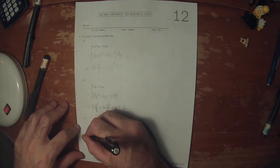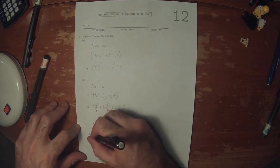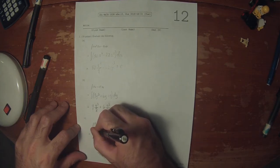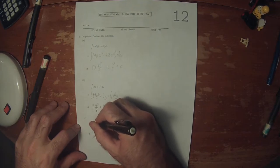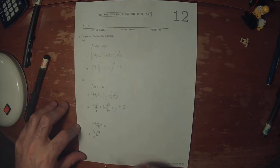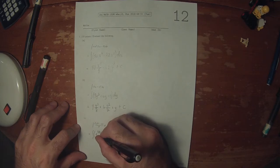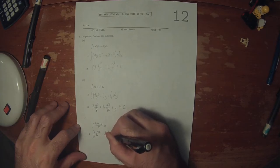And this one, algebraic simplification first. So that would be e to 8t, dividing that denominator into this term, and then t squared—sorry, 6t over t squared is minus 6 over t dt.